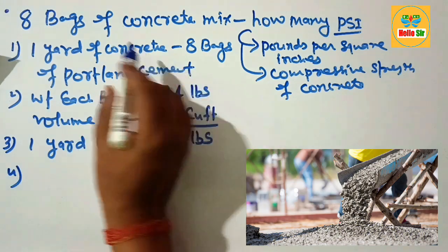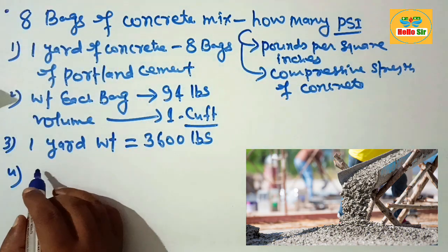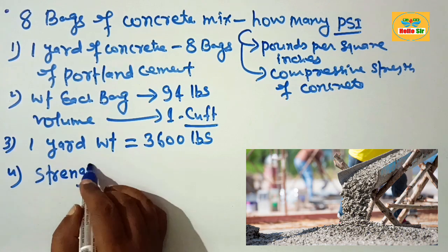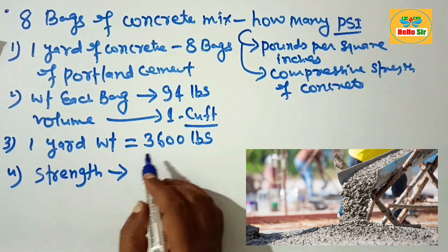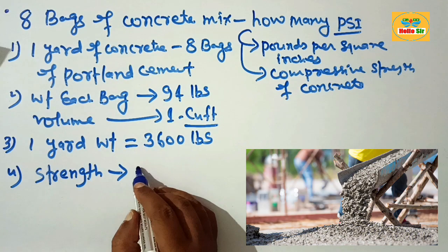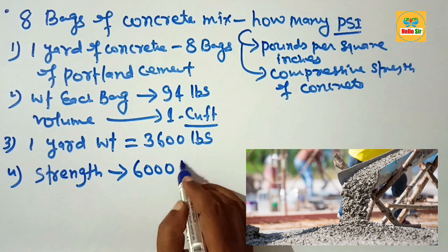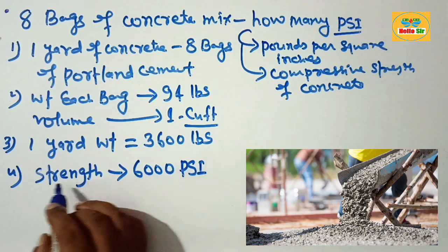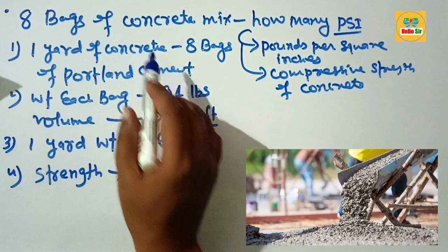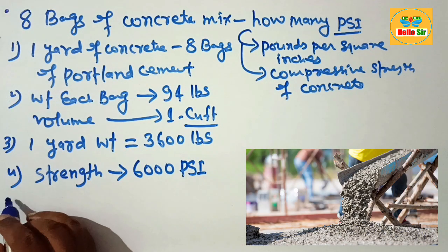Your question is how many PSI in 8 bags of concrete mix — that means you have to figure out the strength. The strength of concrete made with 8 bags of concrete mix is about 6000 PSI.